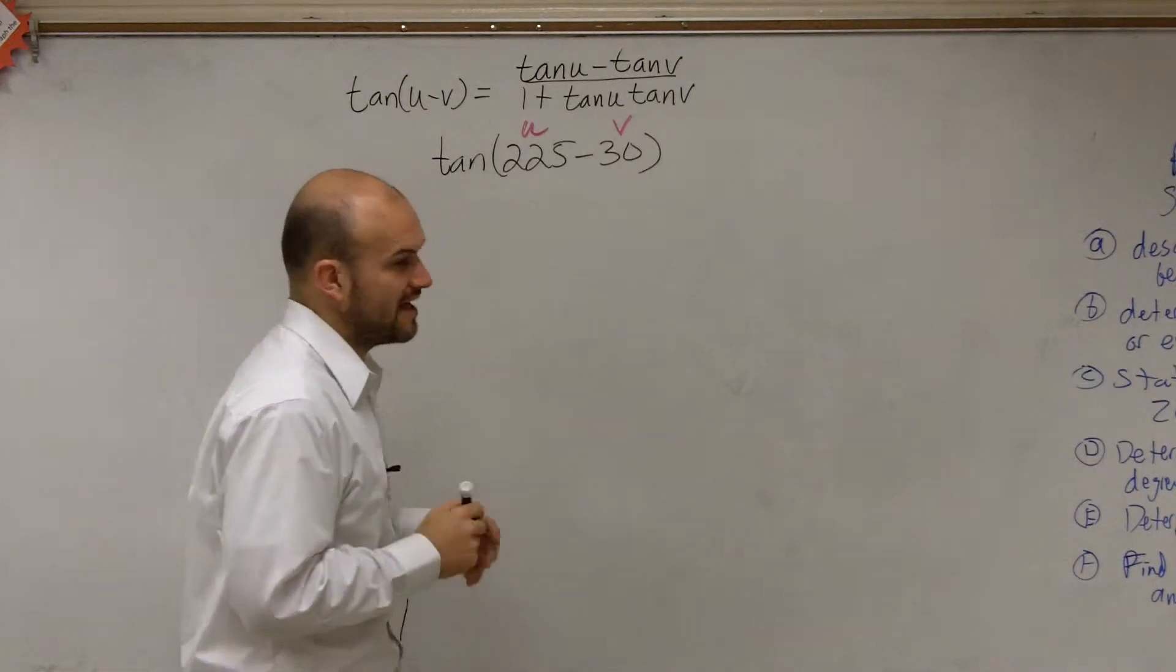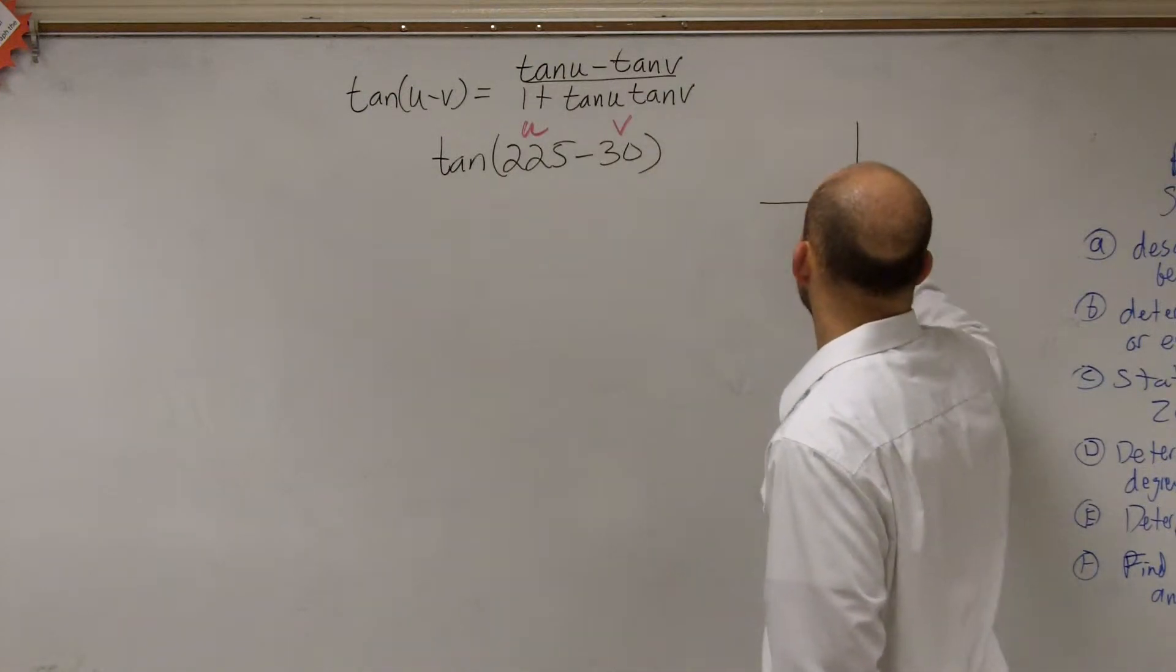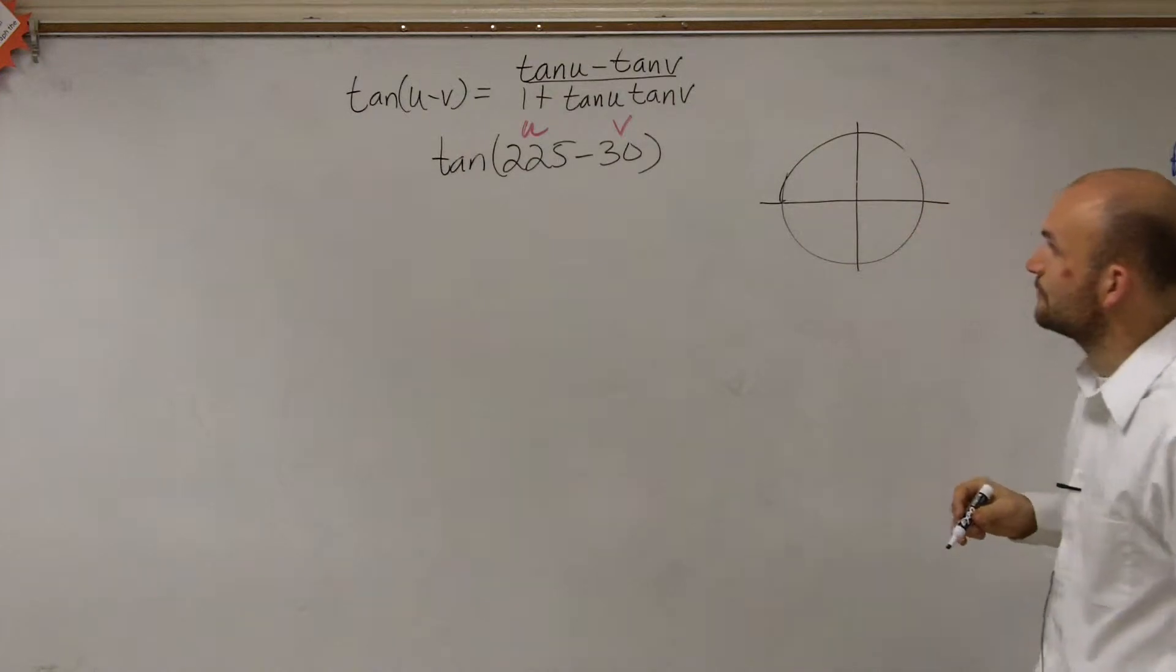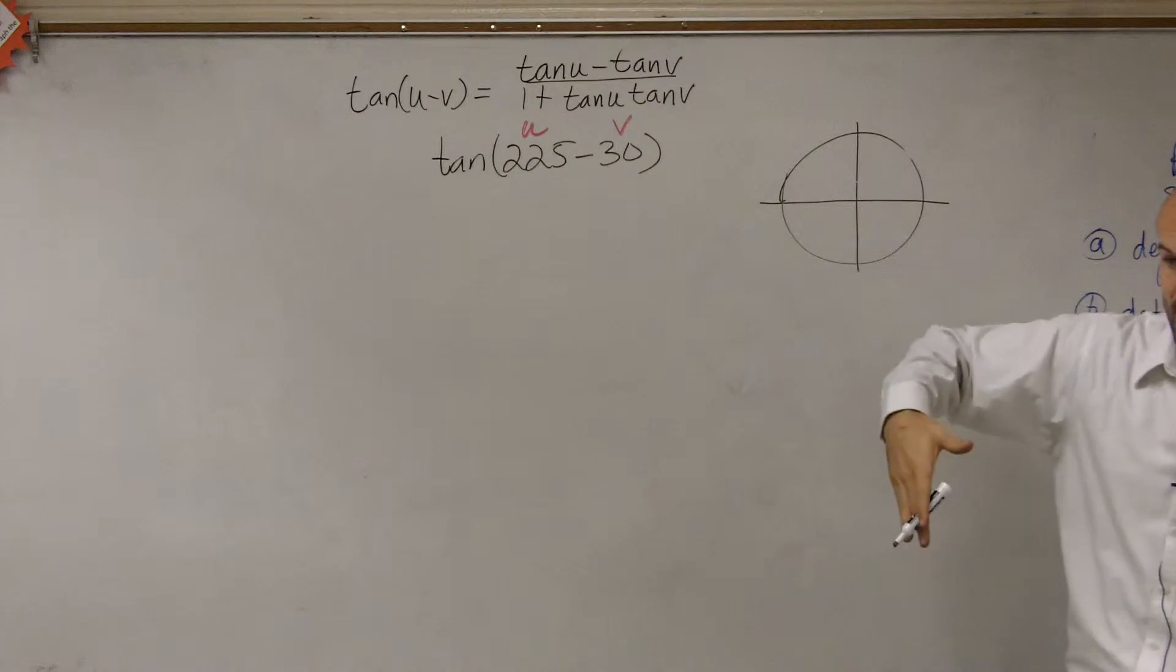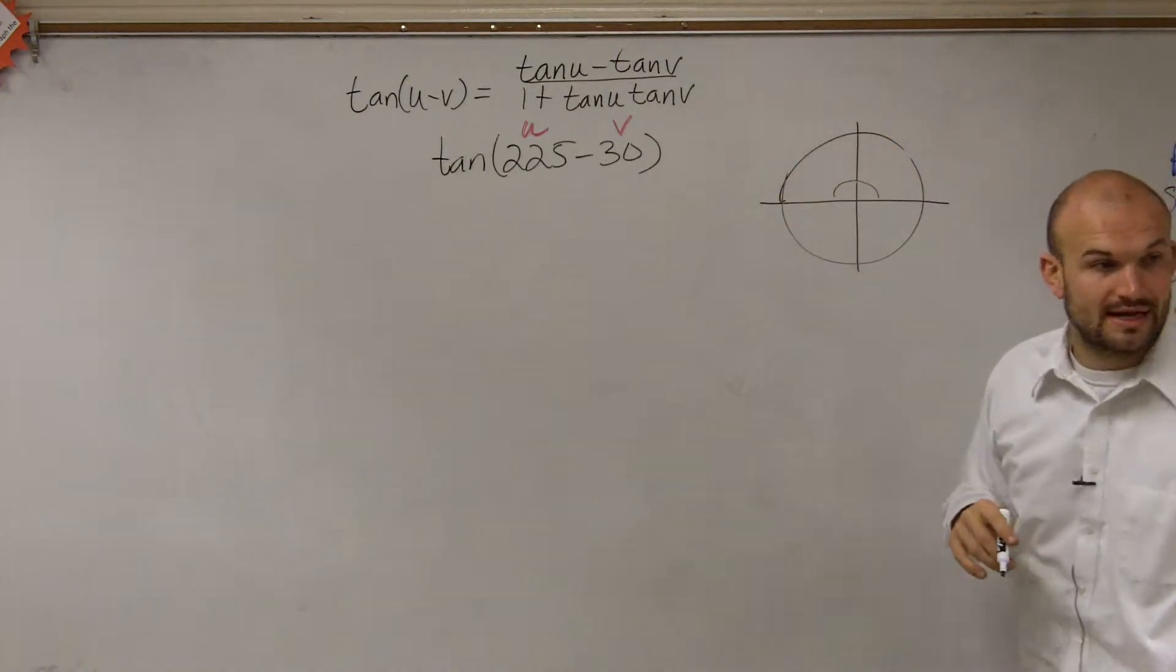We need to evaluate for both of those angles. Let's take a look at where those two angles are if we're going to evaluate them on the unit circle. 225 degrees, we know that's going to be 45 past 180, right? So if here's 180 degrees, to get to 225, I can add an extra 45.